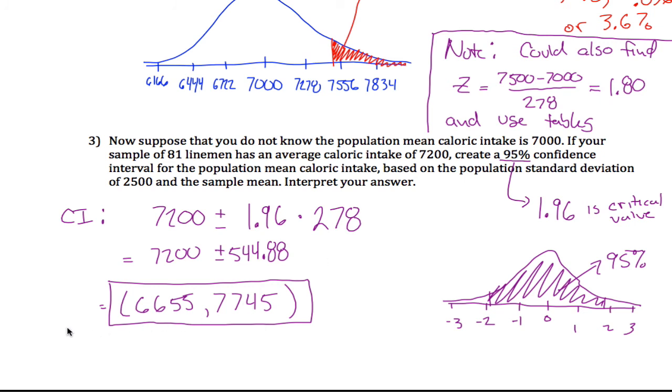Interpret your answer. The interpretation we're going to use for this class, which is close enough to right, is that we are 95% confident that the true value for mu, which is the caloric intake for NFL offensive linemen, is between 6,655 and 7,745. So we don't know the actual value of the mean. I know we assumed it was 7,000 earlier on, but down here we're told we don't know what it is.